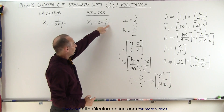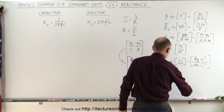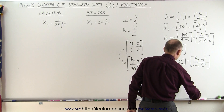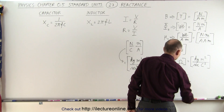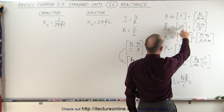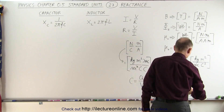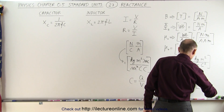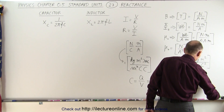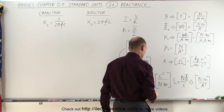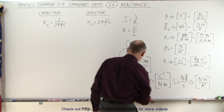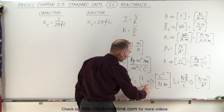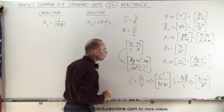The units for self-inductance L — L can be defined as the number of turns times the flux through the coil divided by the current I. The flux through the coil is measured in Webers, which is newton meters per amp. Dividing by the current, which also has units of amps, means the units for inductance are newton meters per amp squared.